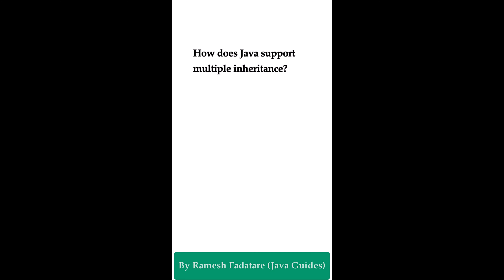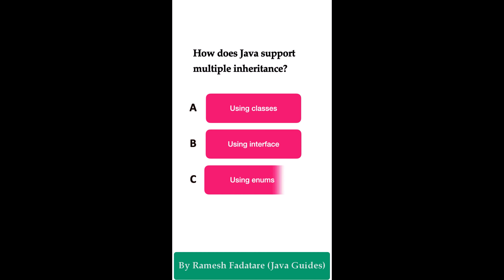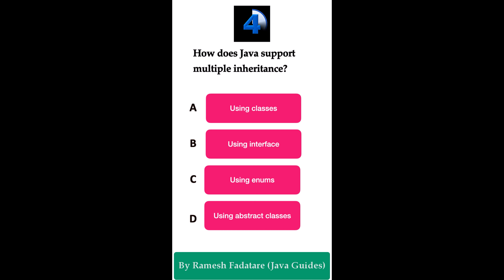How does Java support multiple inheritance? Option A: using classes. Option B: using interfaces. Option C: using enums. Option D: using abstract classes. The correct answer is using interfaces. Java does not support multiple inheritance through classes due to complexity and potential issues such as the diamond problem. However, Java allows a class to implement multiple interfaces, enabling a form of multiple inheritance. A class can implement multiple interfaces and override methods from each to provide implementation.